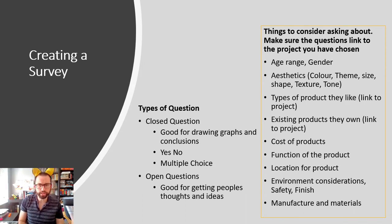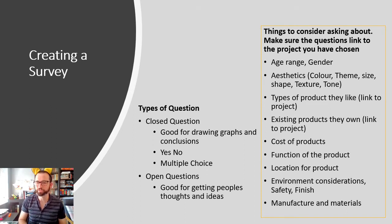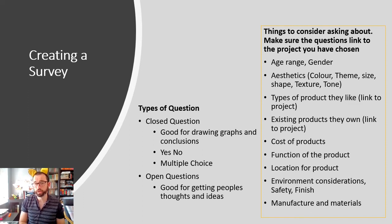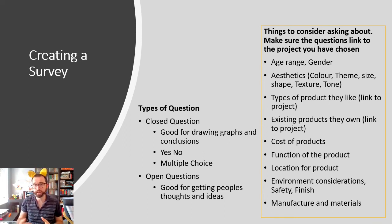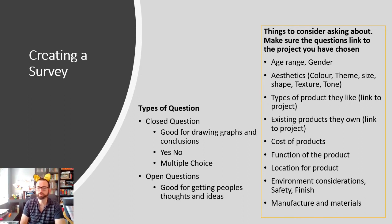There are two types of questions to consider for our survey. Closed questions are really useful for drawing graphs and getting conclusions, because you have yes/no answers or multiple choice. For example, what is your favorite colour? You can give a range — red, blue, green, pink, yellow, purple — and people tick which they like. These are easy to collect and you can make a tally chart.